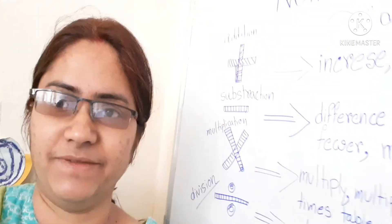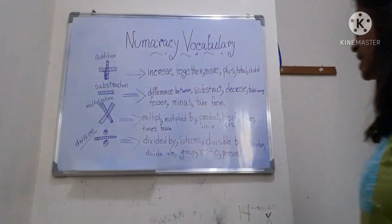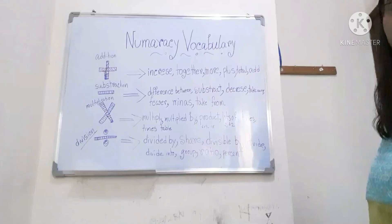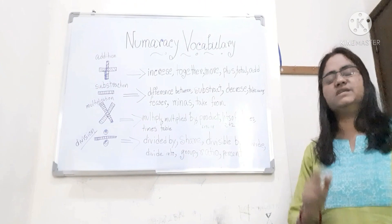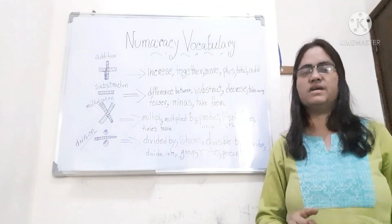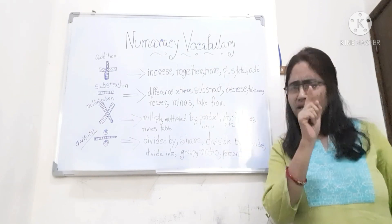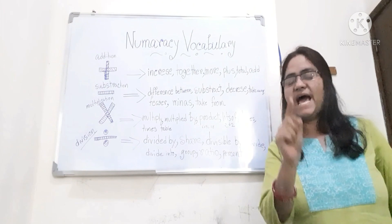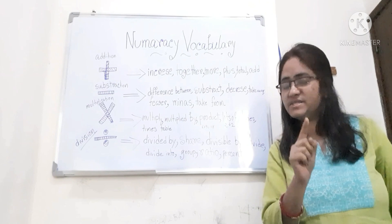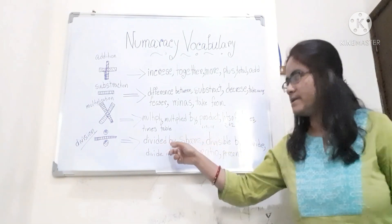Now let's get started with division. In the case of division, the vocabulary words are: divided by, share, divisible by, divide, divide into group, ratio, and percentage. When I am using divided by, the number you are dividing is called the divisor, and the answer of the division is called the quotient. If there is a remaining part in that division, it is called the remainder.